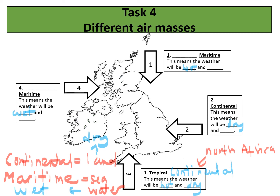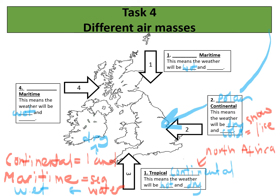Number two is traveling over Central Europe — from Russia and through most of Eastern Europe — so it's traveling over continents, which means it's going to be dry, but it's traveling from the pole. So this is known as a polar continental air mass, which means the weather will be dry and cold. This type of air mass is responsible for our snow and ice — our very, very cold weather.